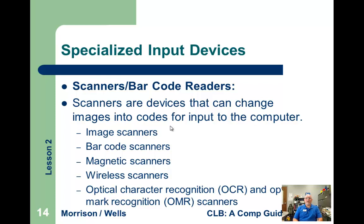Scanners and barcode readers allow us to scan hard copy into the computer. They can be barcode scanners to scan in UPC codes, or magnetic scanners for the stripes on cards. Optical character recognition is also possible, where we can take a printed page, scan it in, and it would actually turn it into an editable Word document.